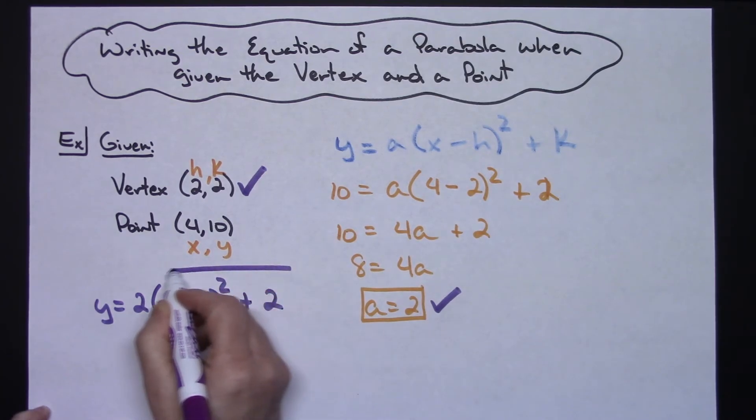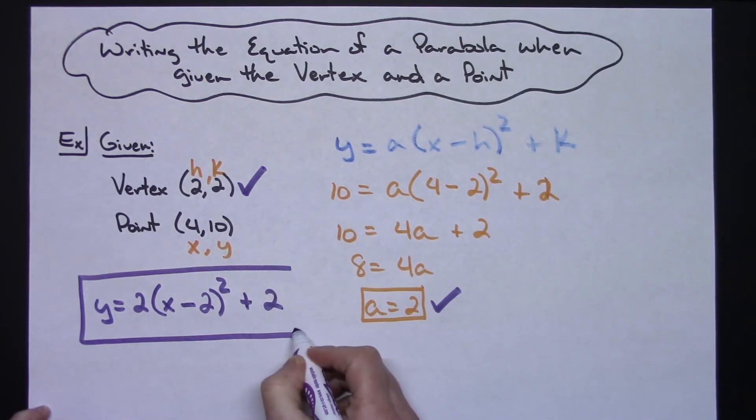So that being my final answer of the equation of the parabola given this vertex and this point and written in the vertex form for a parabola.